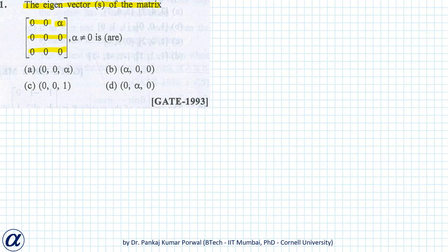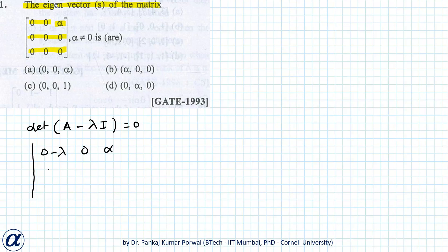To find the eigenvectors of this matrix, we write the eigenvalue equation. We need the characteristic equation of this matrix, which is the determinant of (A minus lambda I) equals zero. That gives us the determinant of the matrix with entries zero minus lambda, zero, alpha, zero, zero minus lambda, zero, zero, zero, zero minus lambda, equals zero. Expanding this determinant with respect to the first column,